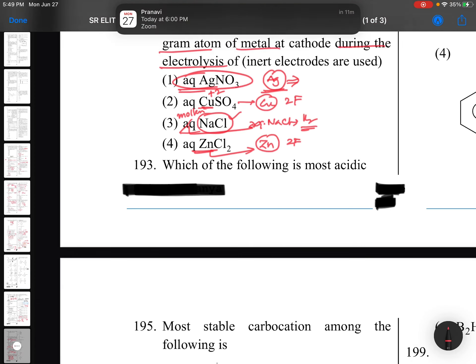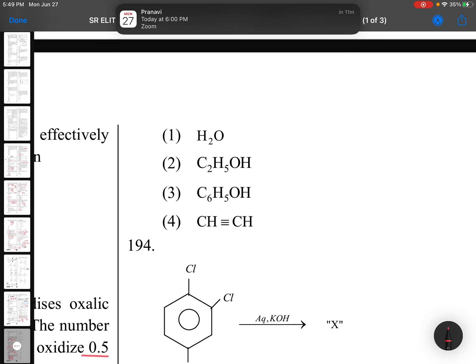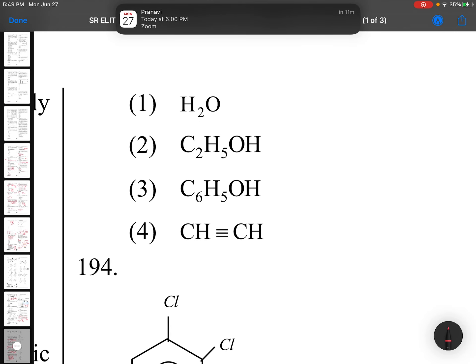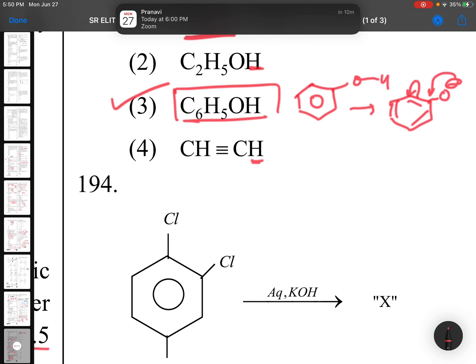Question 193: Which of the following is most acidic? H2O, C2H5OH, C6H5OH is phenol. Phenol is more acidic because phenoxide ion is resonance stable. It is also acidic, it is also acidic, slightly acidic, but phenol is better.